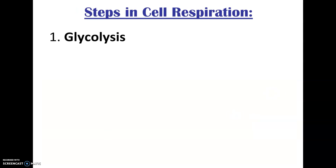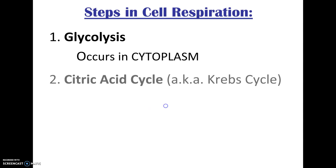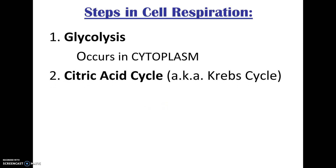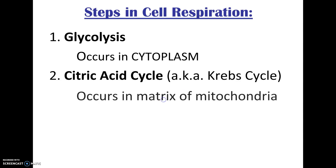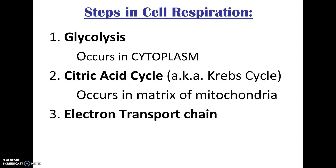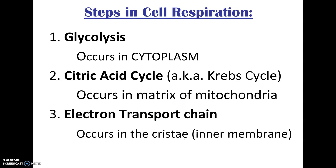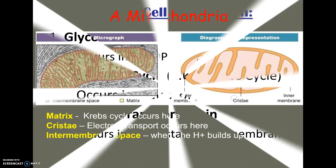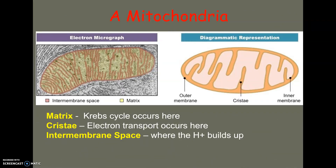There are three main steps in cell respiration. The first one is glycolysis, which happens in the cytoplasm. The second step is called the citric acid cycle, or the Krebs cycle — named after the guy that discovered it, and citric acid because that's the first thing made in it. It happens in the matrix of the mitochondria. The electron transport chain is our last step, and it occurs in what are called the cristae, or the inner membrane folds of the mitochondria.